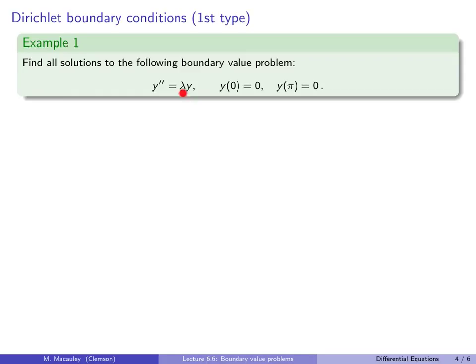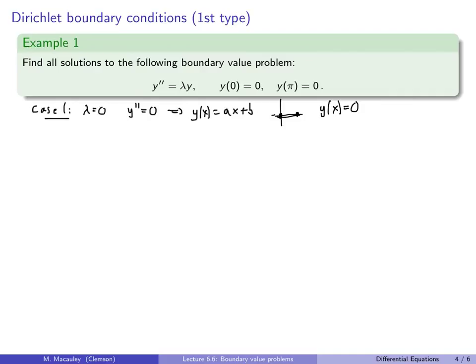Case 1: λ=0. Then y″=0, which means y(x) = ax+b — linear functions. With boundary conditions y(0)=0 and y(π)=0, we have a linear function through two points that are both zero. Obviously, the only solution is y(x)=0. So for λ=0, we have only the zero solution.